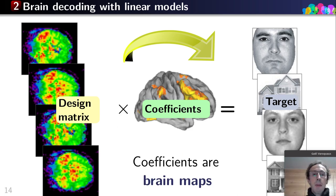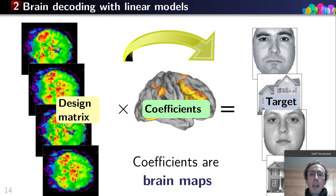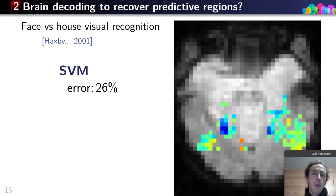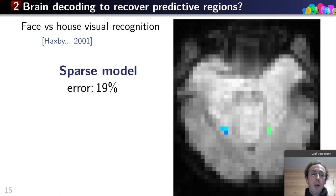A nice aspect is that the coefficients of those linear models are actually brain maps — decoding maps — and they can be useful for interpretation. Here we can look at brain maps in a historical decoding task, trying to discriminate whether the subject is viewing faces or houses in a visual recognition task. A support vector machine achieves 26% error rate. A sparse model achieves only 19% error rate and really focuses on tiny parts of the brain. Or we can use a ridge, which achieves an even smaller 15% error rate.